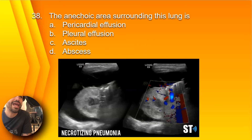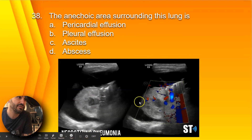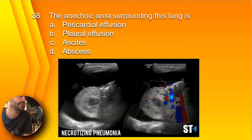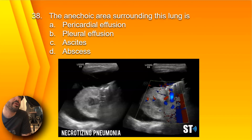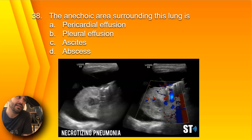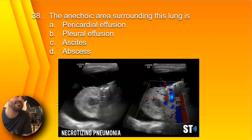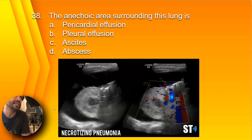Question 38: What is the anechoic area surrounding this lung? The lung is collapsed and you have this anechoic area surrounding it. Is it A, pericardial effusion; B, pleural effusion; C, ascites; or D, abscess? A pericardial effusion would be around the heart within the pericardium. Ascites is fluid built up within the abdomen below the diaphragm. This patient has necrotizing pneumonia and could develop an empyema, but the fluid is pretty anechoic with only a few septations. So your best bet is B, pleural effusion.